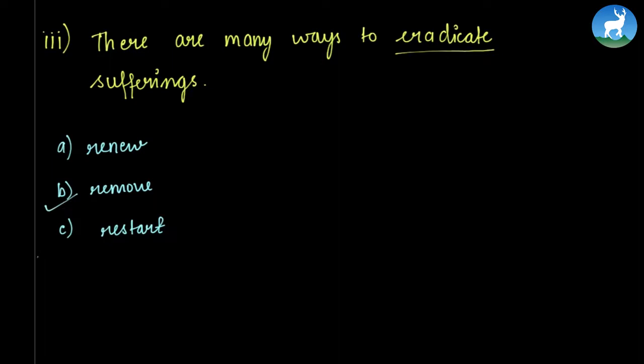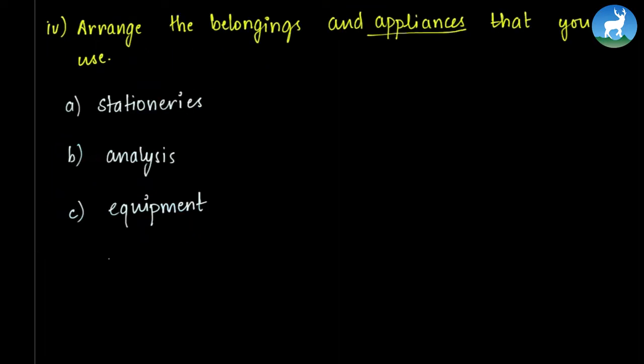Arrange the belongings and appliances that you use. So the word appliances is stationery and something else too. It cannot be only the stationary. Appliances is not analysis. We can say appliances is an equipment because equipment includes everything. So the word appliances means equipment.